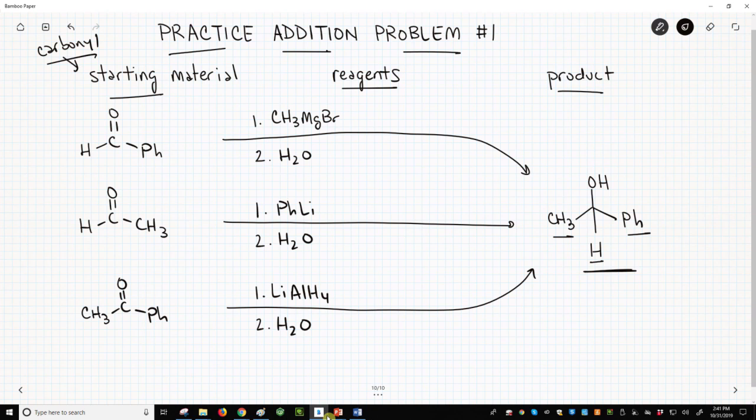Reactions of carbonyls with strong nucleophiles to make alcohols are not difficult. The key step is to identify what group was added and envisioning that group as a strong nucleophile, whether a hydride or an organometallic reagent. All these reactions go through a tetrahedral intermediate. Thank you.